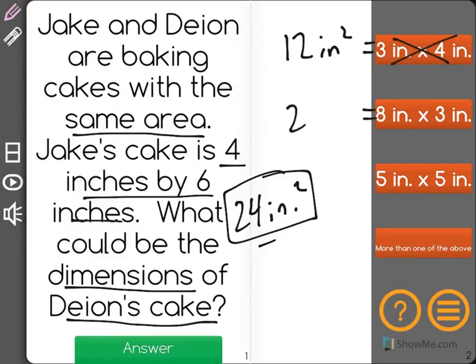8 times 3 is 24 inches squared, but we shouldn't just select that yet, because if you look down here, it says more than one of the above. So, this could be our answer too.